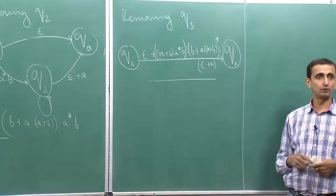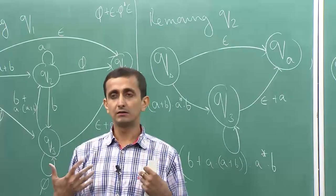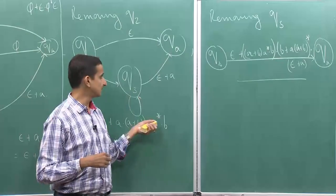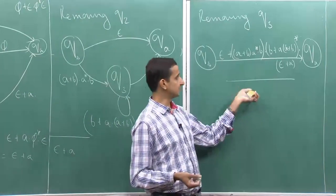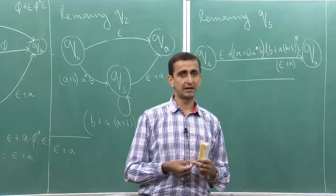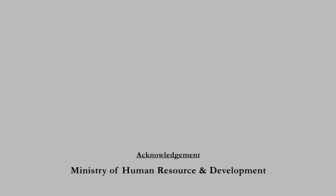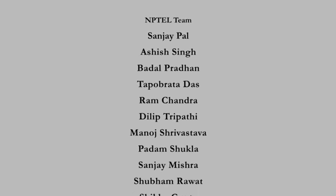So this is the regular expression corresponding to our initial DFA and this is the algorithm. It is an iterative process wherein each step you remove one state and construct a new GNFA with new labels on its transitions, until you get rid of all the internal states except for QS and QA. Whatever label the edge from QS to QA has is your final regular expression. Thank you very much.